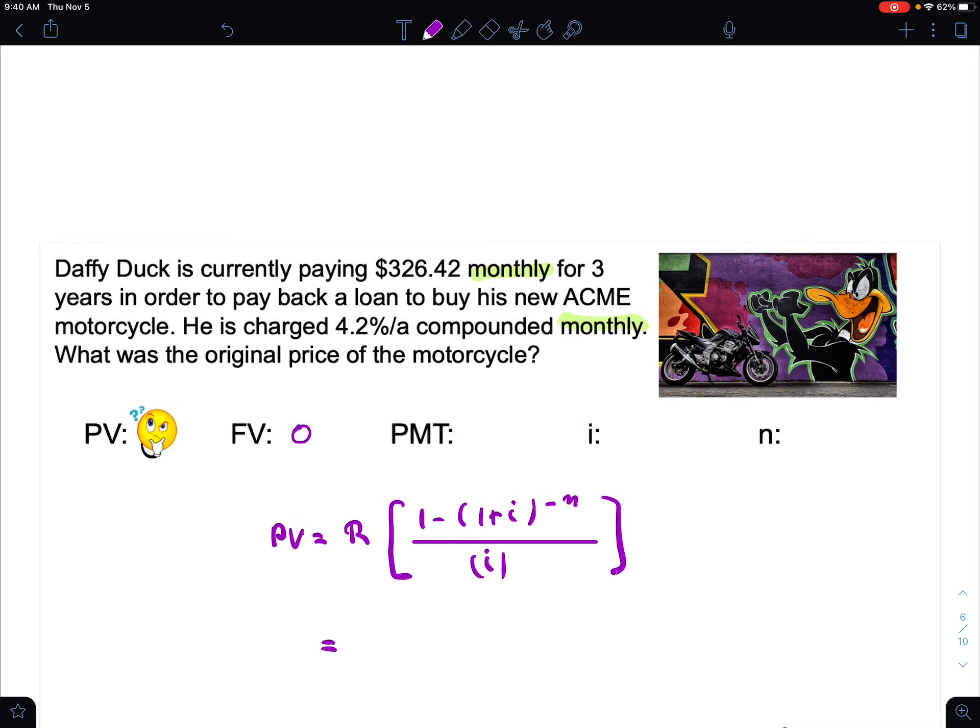The future value is going to be zero. It's going to pay off, there will be nothing left. The payment we know is $326.42, and the interest rate is 0.042. But it's monthly.